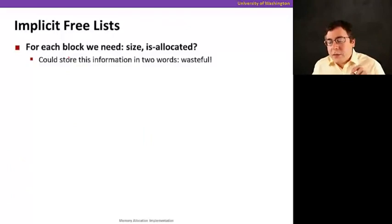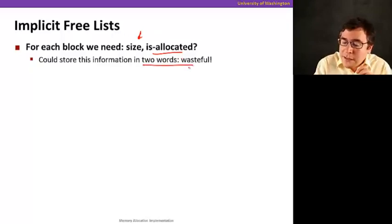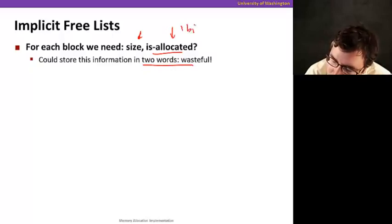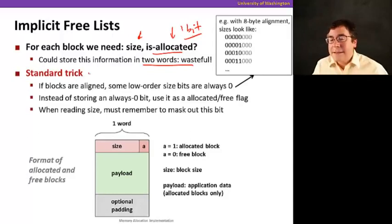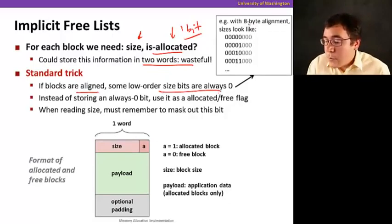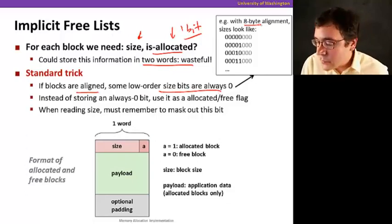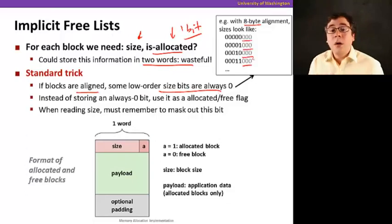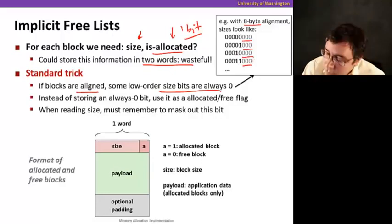All right, so let's look at implicit free lists now. So for each block, we need to know two things: What is its size and whether it's allocated or not. We could store that in two words, but it's a little wasteful, right? This allocated here, fundamentally, we only need one bit. So using the entire word for it is so wasteful. So what are we going to do? Well, we're going to use a standard trick that does the following. Since the blocks are aligned, we know that the low order bits of the addresses are always zero. For example, if you have an eight-byte alignment, all our addresses are going to look like this. The lower three bits are all going to be zero. So why not use this last bit here and say, we're going to use that bit just to tell us whether the block is allocated or not.